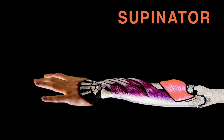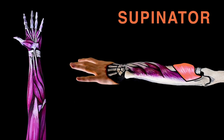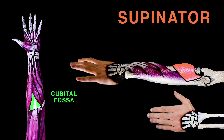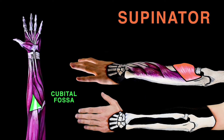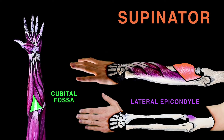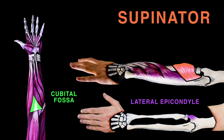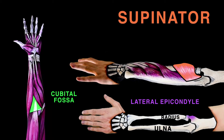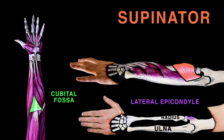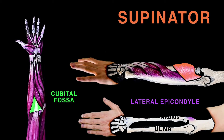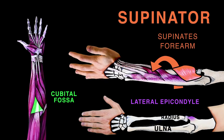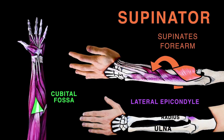The supinator's two heads lie on the floor of the cubital fossa. One head originates from the lateral epicondyle of the humerus, while the other originates from the posterior surface of the ulna. They both insert into the posterior surface of the radius. The supinator acts to supinate the forearm.